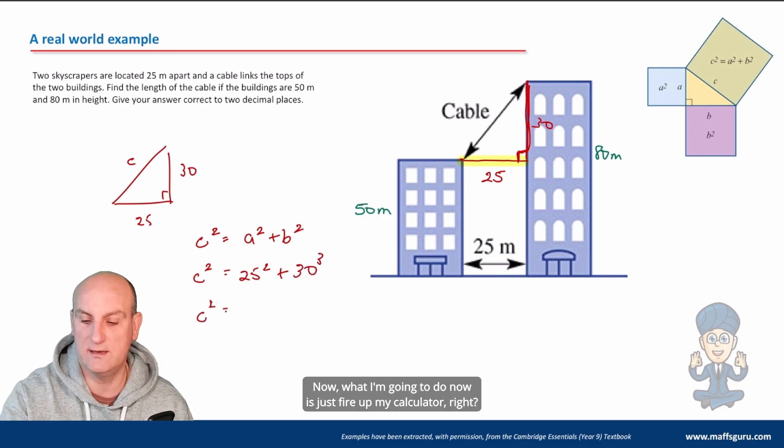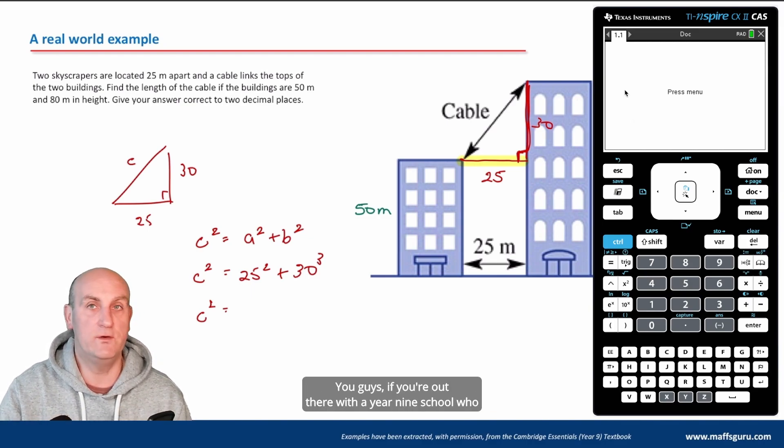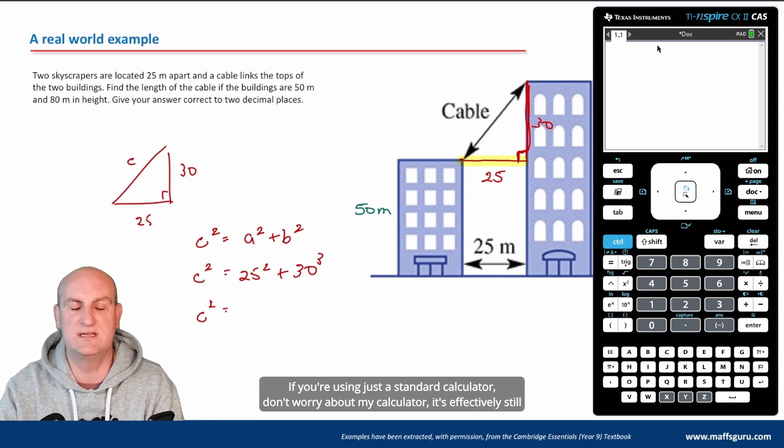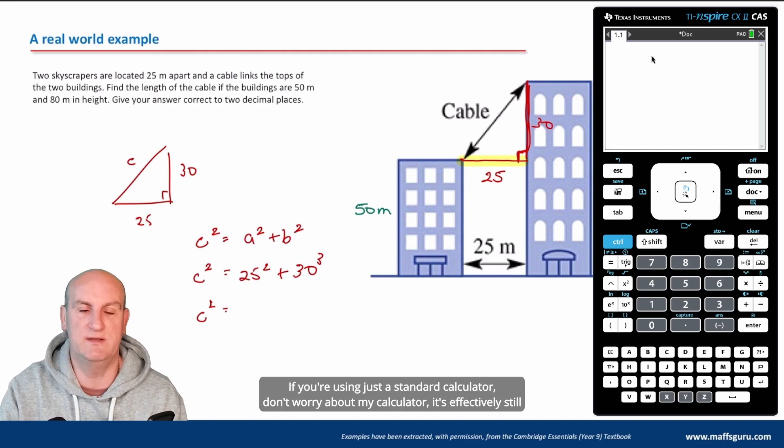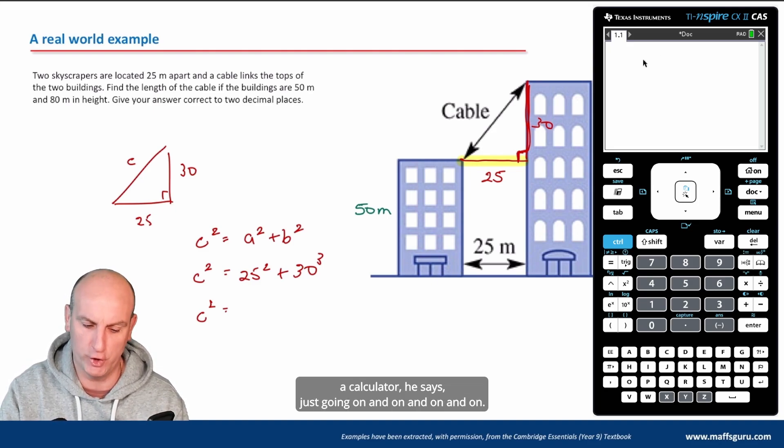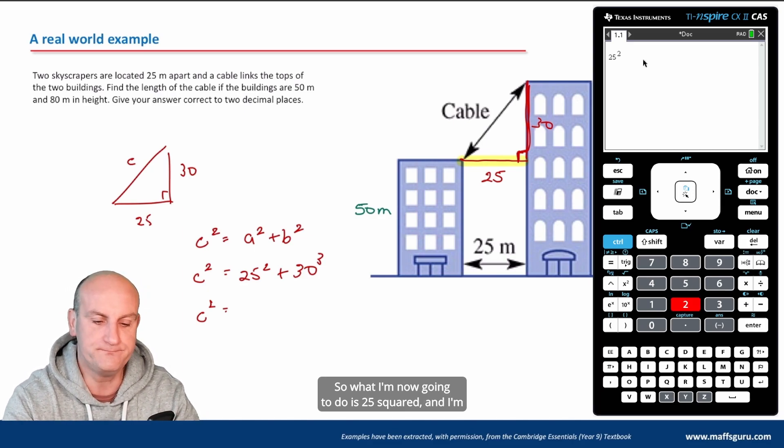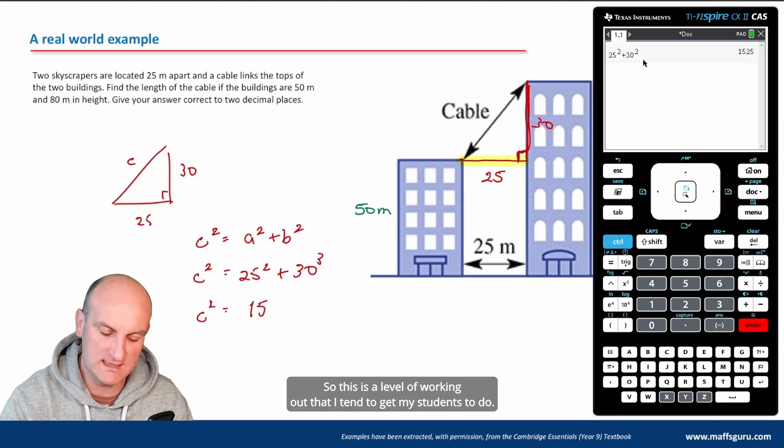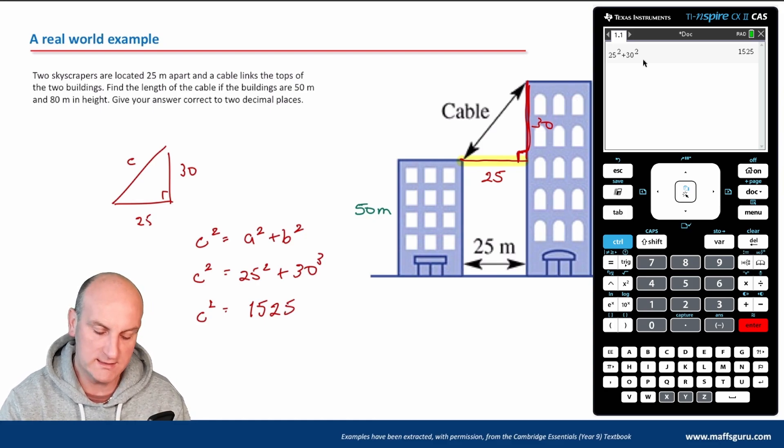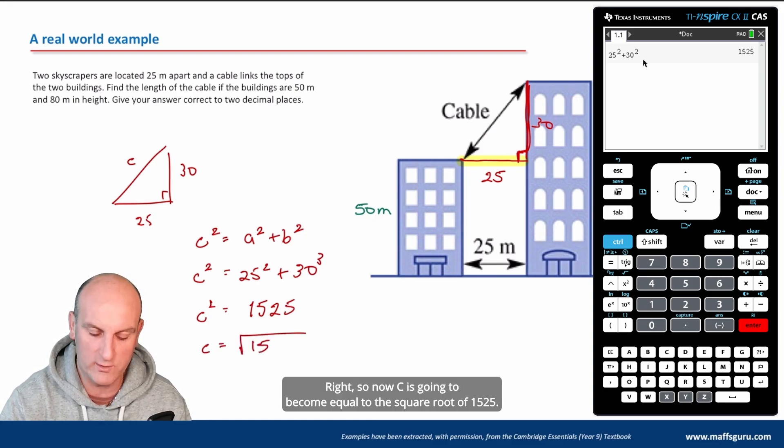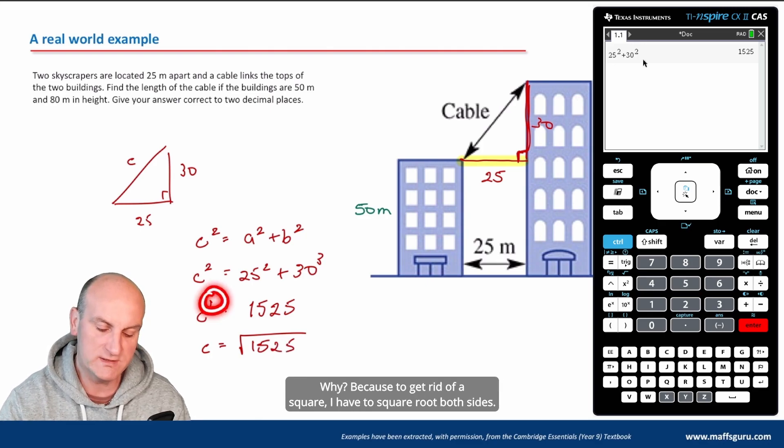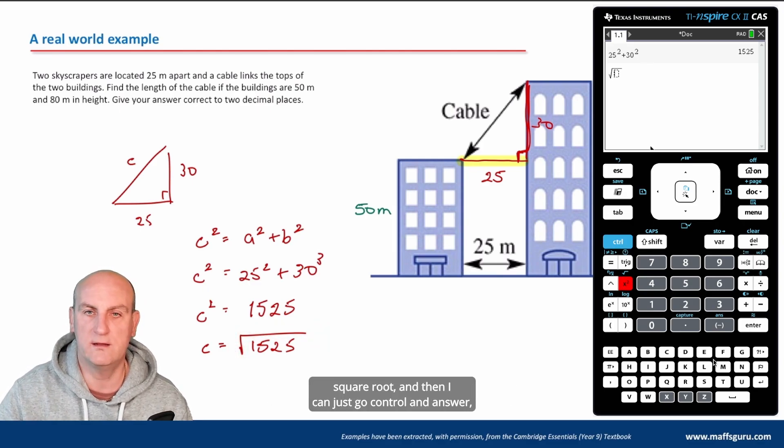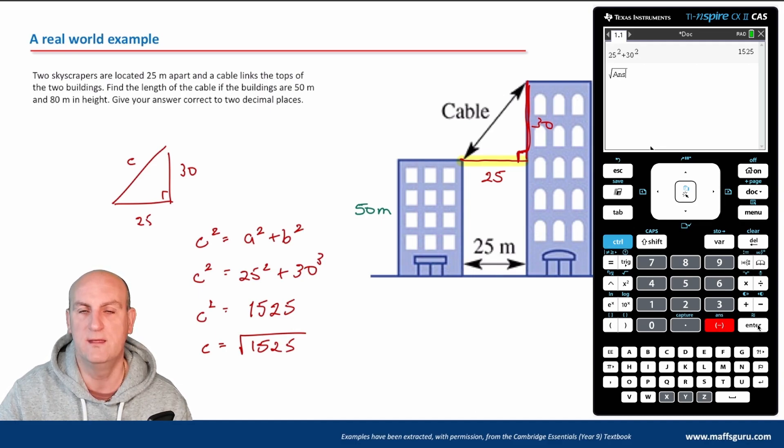Now, what I'm going to do is just fire up my calculator. So I'm going to use 25 squared and add that to 30 squared. And enter is 1525. So this is the level of working out that I tend to get my students to do. So now C is going to become equal to the square root of 1525. Why? Because to get rid of a square, I have to square root both sides. I go control and square root, and I get 5 root 61.